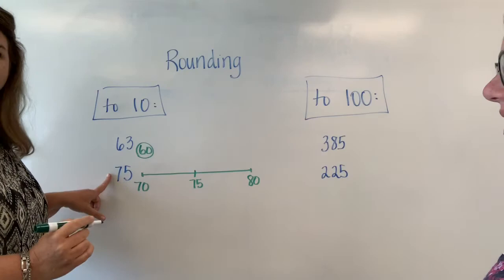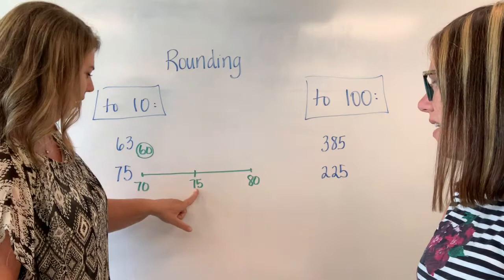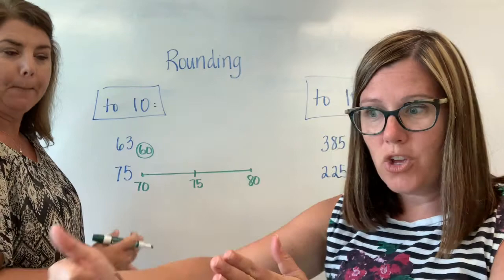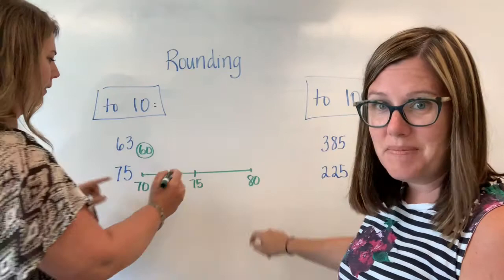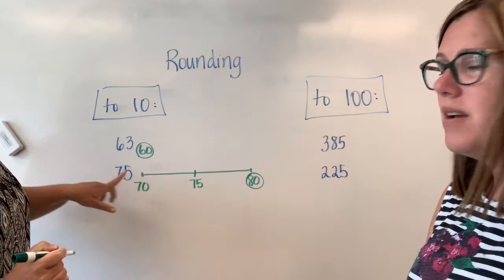75 that is exactly what I have. So Mrs. Wolf if I have 75 and I'm right smack in the middle which way do I go? Okay so anytime you're in the middle it always goes towards the bigger number. So 75 would round up to 80. Okay so if I'm in the middle I always go up. All right so 75 rounds to 80.